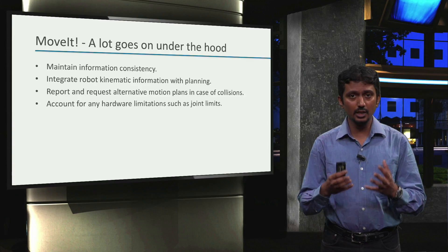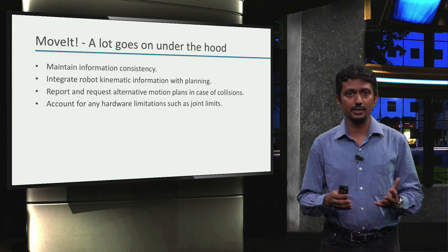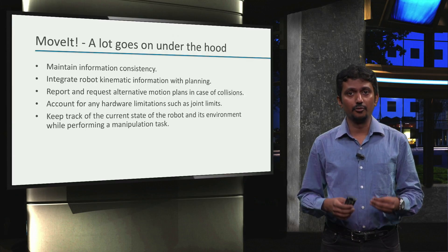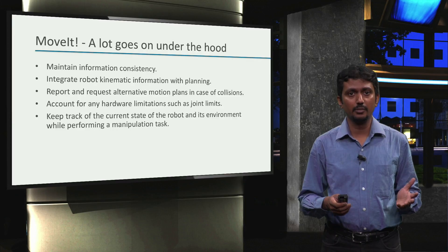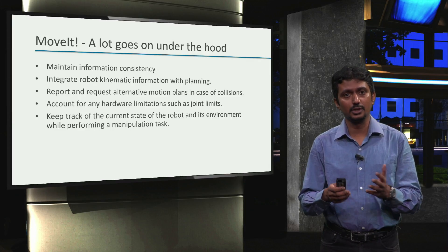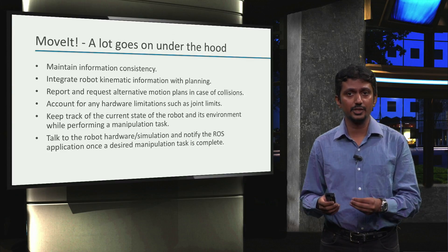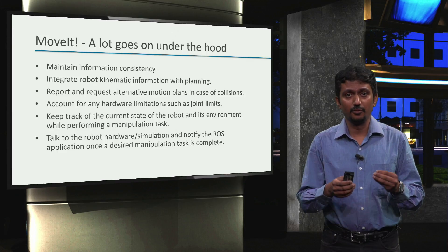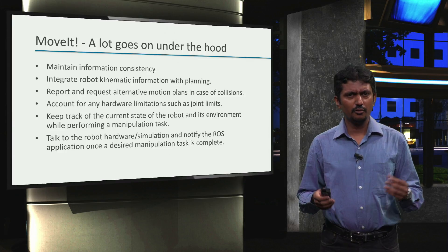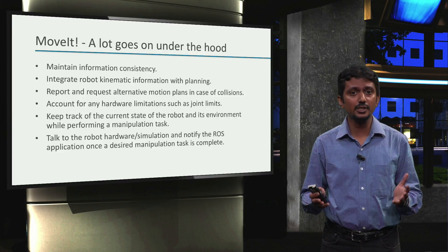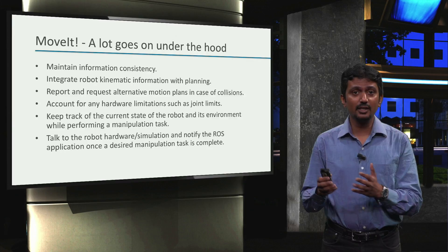MoveIt also takes care of the interaction between collision checking and motion planning to report and request alternative plans in case the initial plans from the planners were unsafe due to collisions. MoveIt accounts for ensuring the physical limits of a robot, such as the minimum and maximum joint angles, are respected while planning and executing motions. It keeps track of where a robot currently is with respect to its surroundings so that any dynamically changing aspects in the environment are also accounted for. MoveIt also takes care of communicating with the robot hardware or simulation and notifies the ROS application once the desired manipulation task is complete.